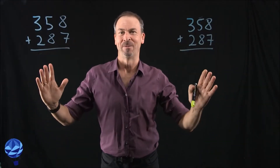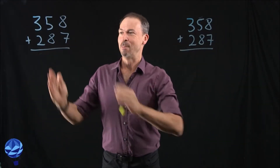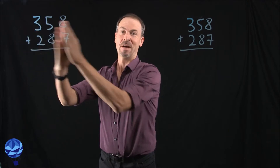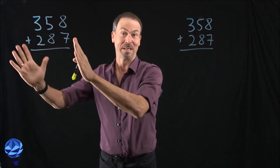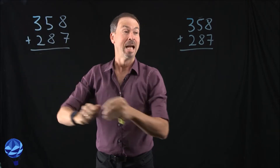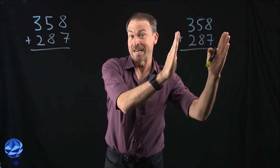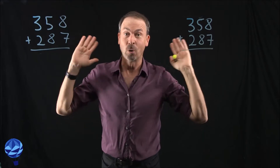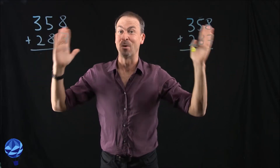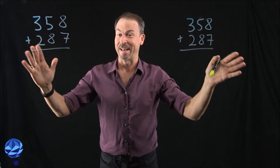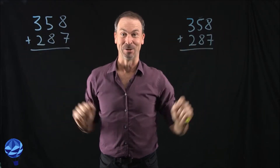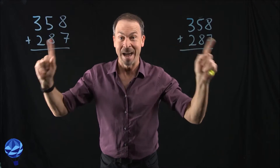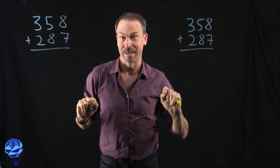We have two approaches for doing long division. We've got the James Tanton way, which is go left to right and do all the explosions at the end. And we've got the standard algorithm, the one usually taught in school. Of course, both are correct. Both are doing good, right things and fine to do. But let's compare them and make sure they are actually doing the same thing.